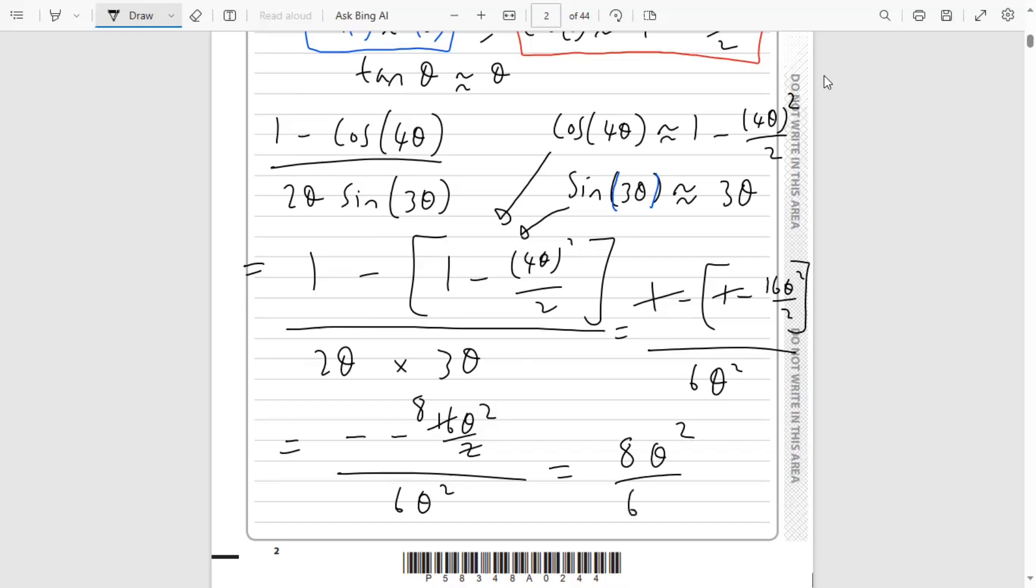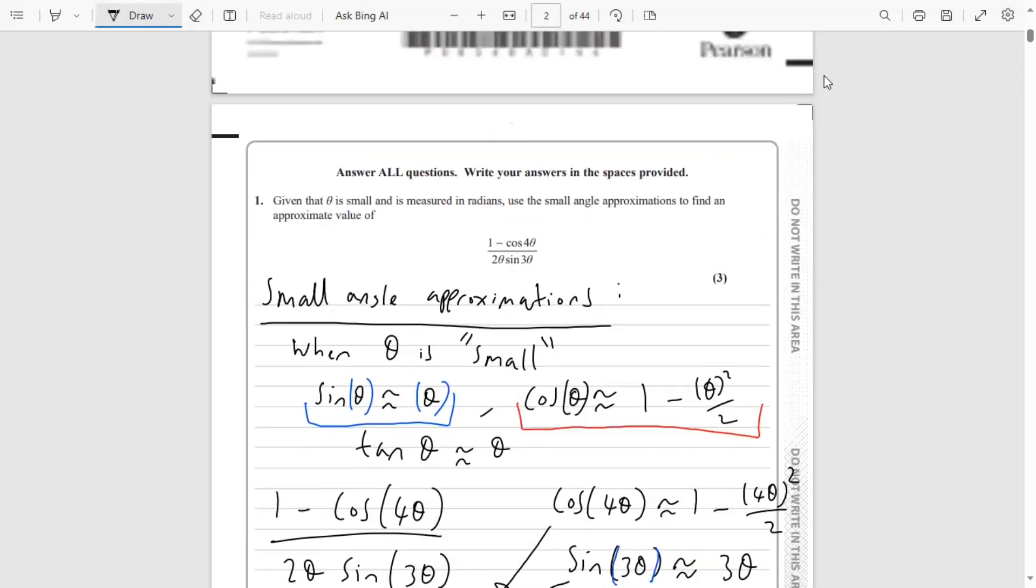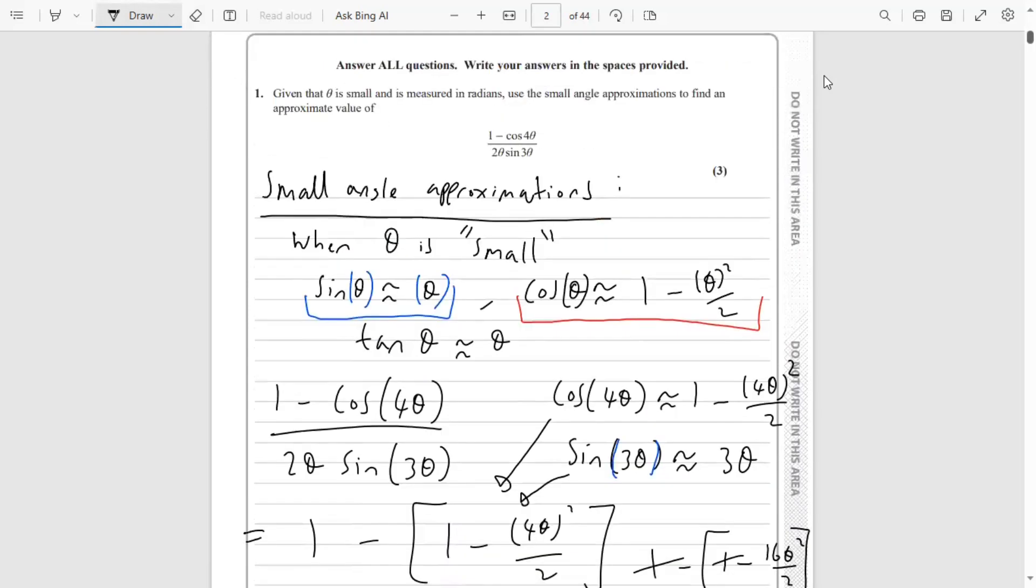The θ² will cancel out since θ² over θ² is 1. We've got 8 over 6, and 8 divided by 6 is the same as 4 over 3. That's our final answer. When theta is a small angle, (1 - cos 4θ) divided by 2θ times sine 3θ is approximately 4/3.